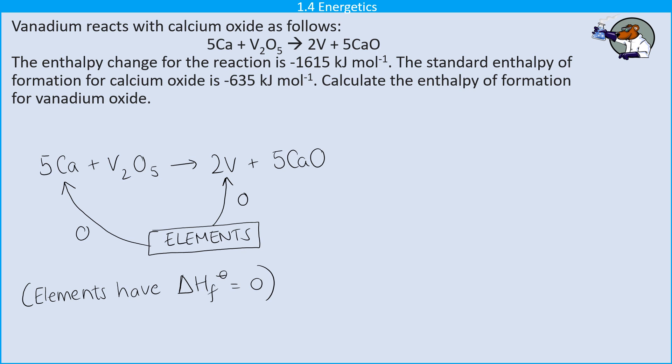Then I've been told in the question that the enthalpy of formation of calcium oxide is minus 635, but I don't have just one mole of calcium oxide. I have five moles. So that arrow is going to need to be five times minus 635. And then I've also been told that the enthalpy change for the reaction as a whole is minus 1615. So I can write that in as well.